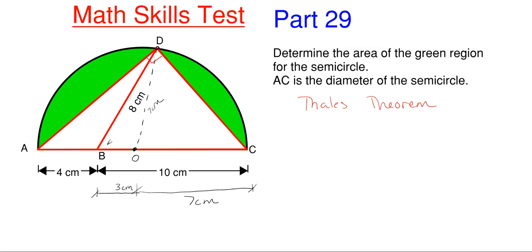I'm going to find the angle in the internal triangle D, B, O and call it angle X. The reason is that angle X in the small triangle DBO will be exactly the same angle B in the larger triangle DBC, and I can then use that to find side DC.